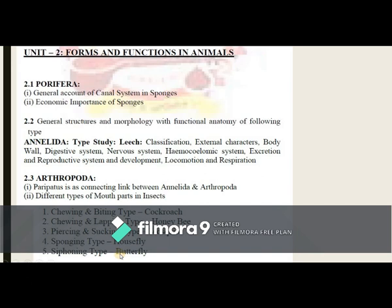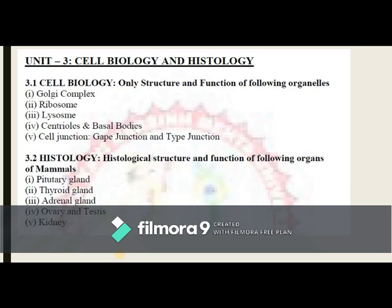In Unit 3, you have to study cell biology and histology, further divided into subunits 3.1 and 3.2. Subunit 3.1 is cell biology, where you study the structure and functions of the following cellular organelles: Golgi complex, ribosome, lysosome, centrioles and basal bodies, and cell junctions including gap junctions and tight junctions.